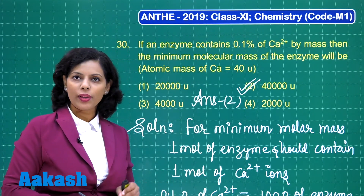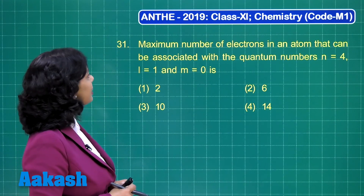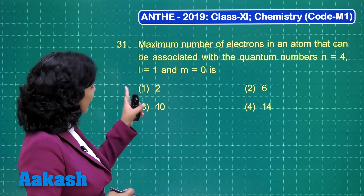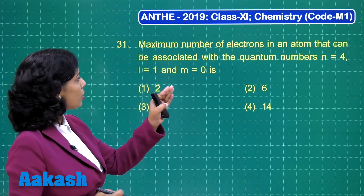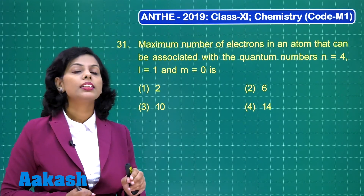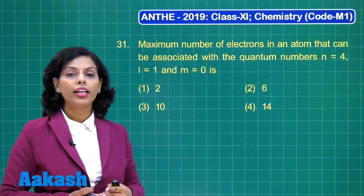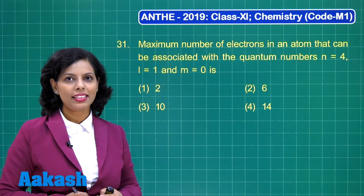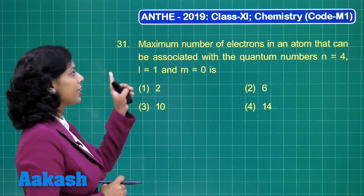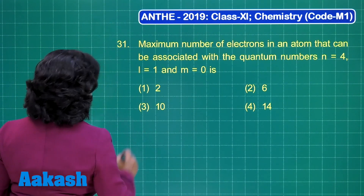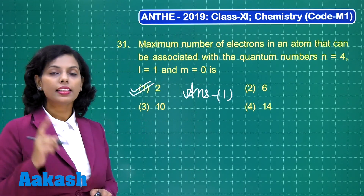Now it's the turn for question number 31. The maximum number of electrons in an atom that can be associated with quantum numbers n = 4, l = 1, and m = 0. We have the principal quantum number, azimuthal quantum number, and magnetic quantum number given. For this set, there can only be 2 electrons, with different spin quantum numbers: +½ and −½. So the maximum number of electrons is 2, which is option 1.